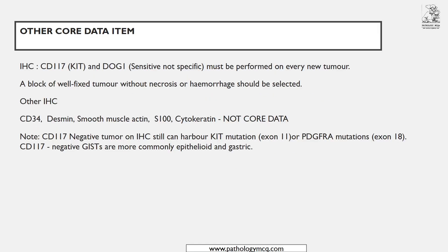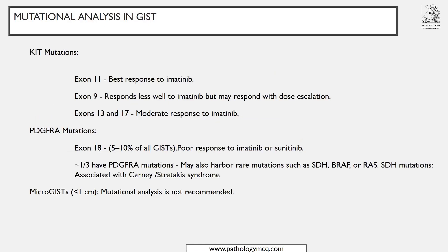For c-Kit mutations, the relevant exons are 11, 9, 13, and 17. Exon 11 mutations have a better response to imatinib. Exons 13 and 17 have a moderate response. Exon 9 mutations show resistance or reduced response to imatinib, requiring dose escalation or an additional TKI inhibitor. That is why knowing the specific exon is important in c-Kit mutational studies.